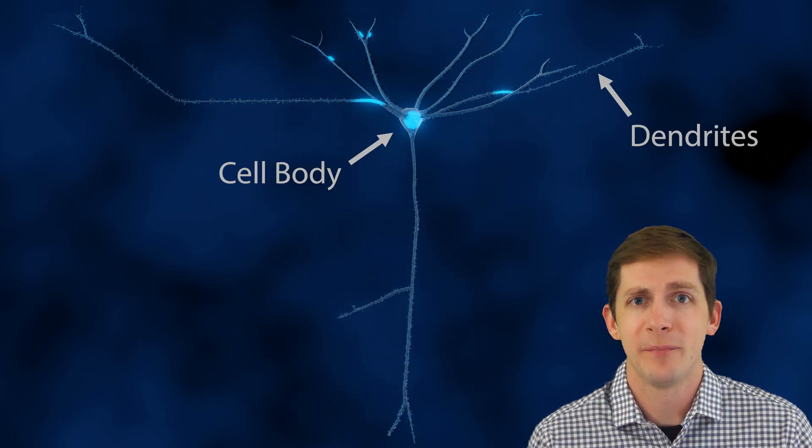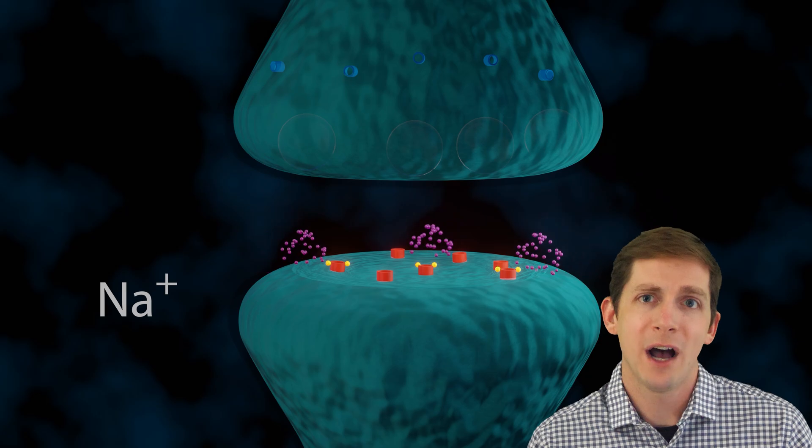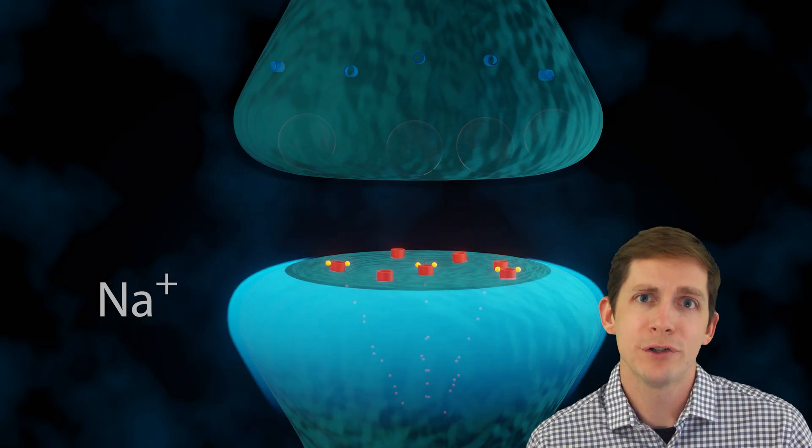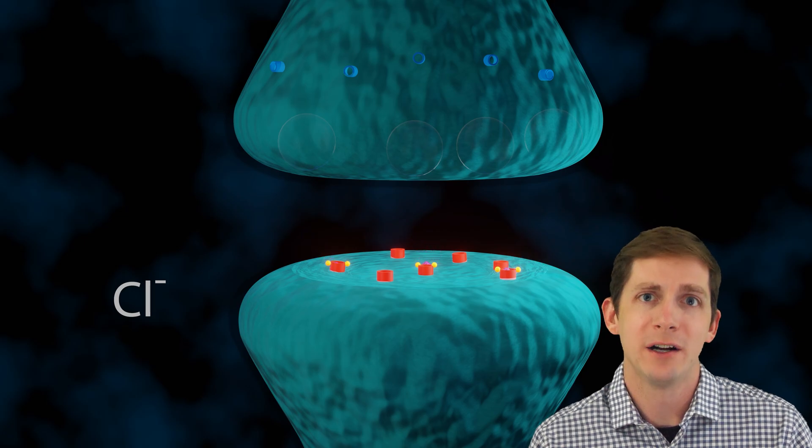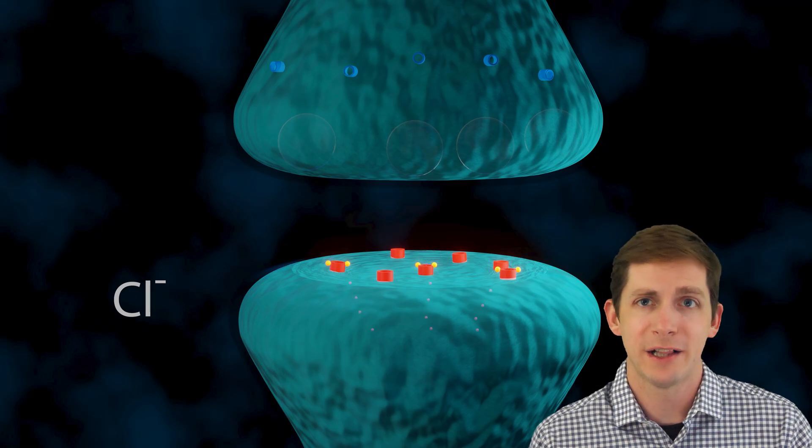Charge accumulates within the dendrites and cell body of the neuron. Receiving positively charged ions drives the neuron closer to the firing threshold and receiving negatively charged ions makes it so the neuron is less likely to fire.